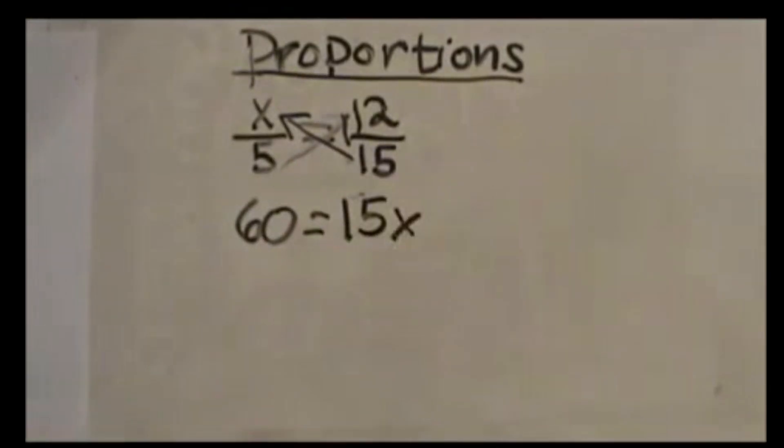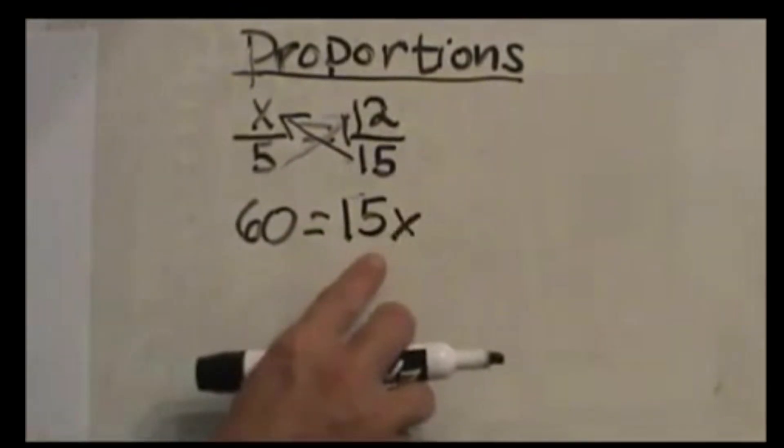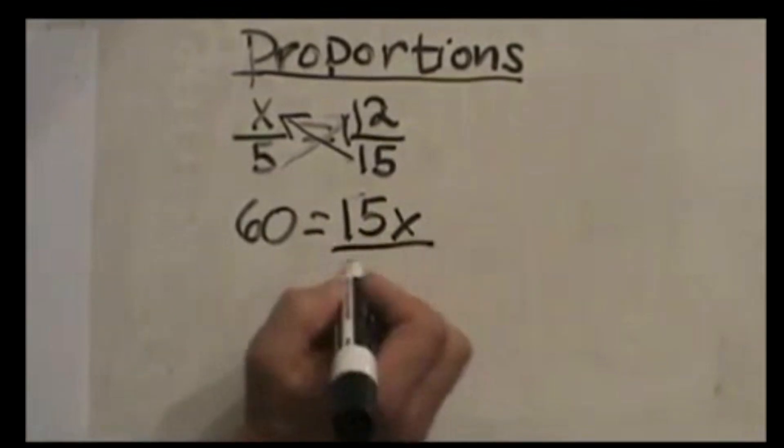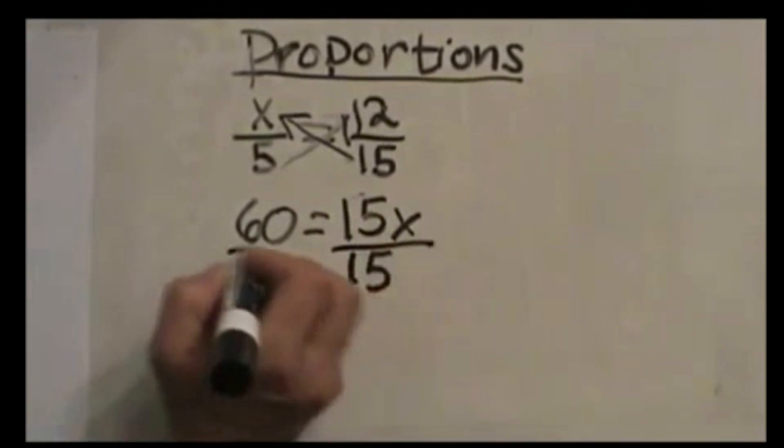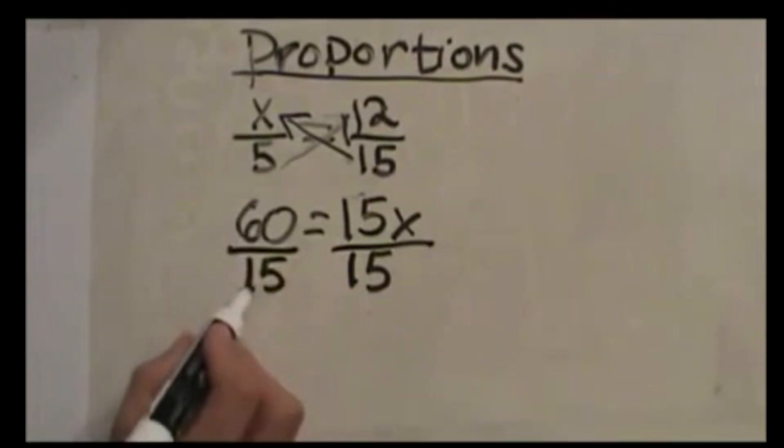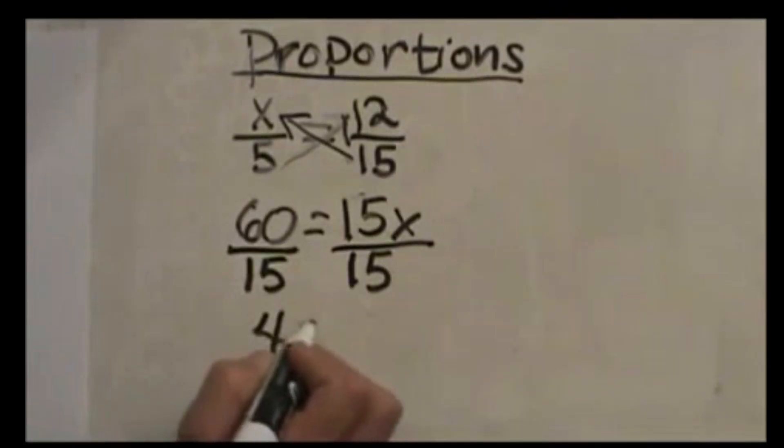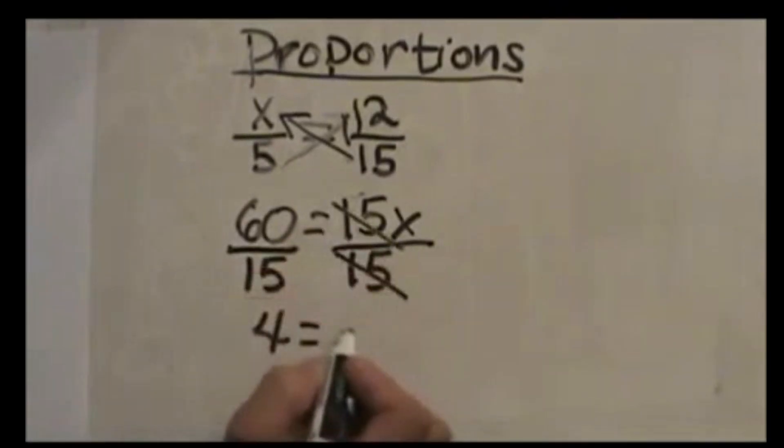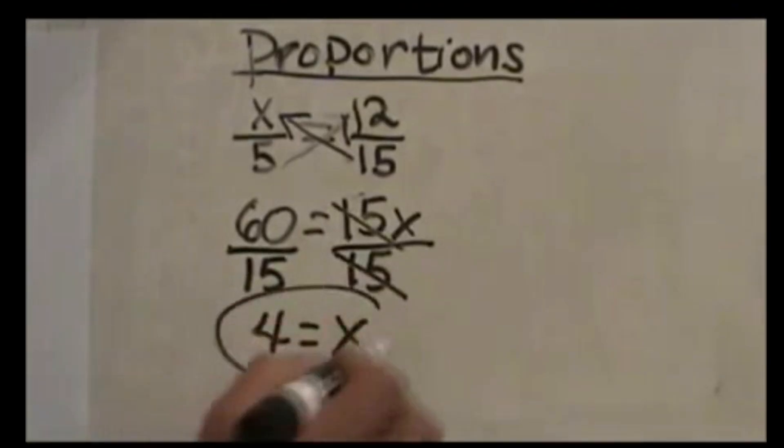Then we're going to divide by the coefficient that is with x because you have to get x by itself. So you divide by 15, and 60 divided by 15 is 4. And the 15s cancel so you're left with x. So there's your answer.